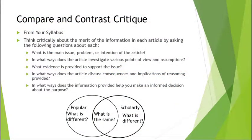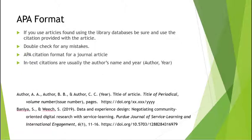After you find your articles, it's time to compare and contrast them. This is directly from your syllabus. Think critically about the merit of the information in each article by asking the following questions: What is the main issue, problem, or intention of the article? In what ways does the article investigate various points of view and assumptions? What evidence is provided to support the issue? In what ways does the article discuss consequences and implications of reasoning? And in what ways does the information help you make an informed decision about the purpose? Don't forget to format your citations correctly using APA format, double check citations from library databases, and include in-text citations with the author's last name and year in parentheses, with the full citation on a separate References page.